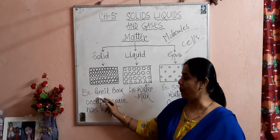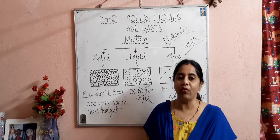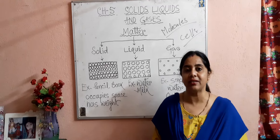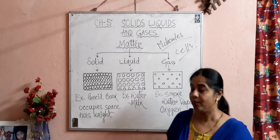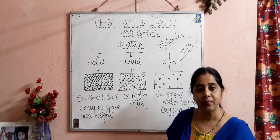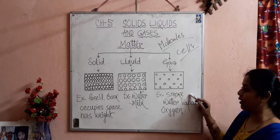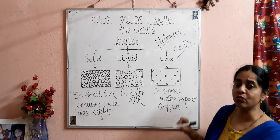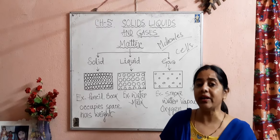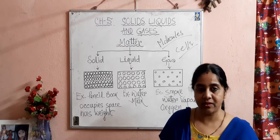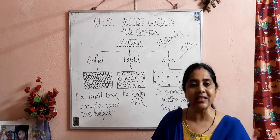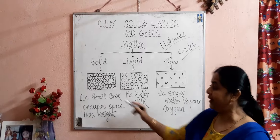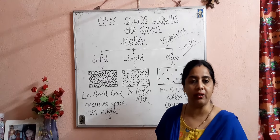Children, examples of solids — you can give pencil, book, telephone, bed, cupboard, anything solid. Examples of liquids are water, milk, juices, different types of oils. Examples of gases are smoke, water vapor or steam, and oxygen. Smoke is dark, that's why you can see it. But usually we cannot see gaseous things — we just feel them, as gases are colorless. That is why we are unable to see them.